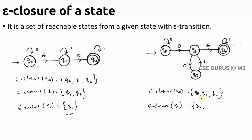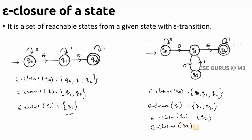For ε-closure(Q1): include Q1 first. Q1 → Q2 via epsilon, so Q2 is included. Q1 → Q3 has no epsilon transition, so Q3 is excluded. Therefore ε-closure(Q1) = {Q1, Q2}. For ε-closure(Q2): include Q2, and there is no epsilon transition from Q2, so ε-closure(Q2) = {Q2}. Finally, ε-closure(Q3): include Q3, no epsilon transition from Q3, so ε-closure(Q3) = {Q3}.